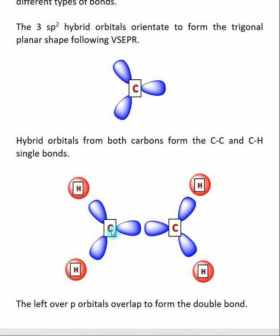An sp² hybridized orbital from one carbon and an sp² hybridized orbital from another carbon overlaps to form the carbon-carbon single bond. And then four C-H covalent bonds are formed by the overlap of an sp² hybridized orbital from carbon and an s orbital from hydrogen.